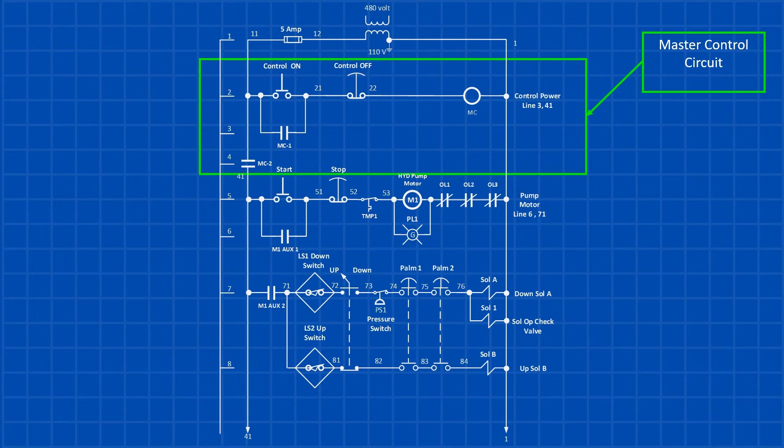In line two, pressing the control on push button energizes the master control relay. This action closes the auxiliary contact MC1, bypassing the momentary start push button and keeping the master circuit energized. Additionally, when the master control relay activates, the MC2 contact closes, allowing control power to flow to the rest of the circuit.